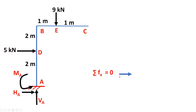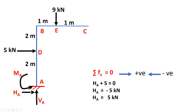Algebraic sum of forces in the x-direction equals zero. Right side is positive, left side is negative — this is our assumed sign convention. Ha is acting to the right, so positive. The 5 kN force is also acting to the right, so positive. Ha plus 5 equals zero, so Ha equals minus 5, meaning the force is actually acting to the left. So Ha equals 5 kN.